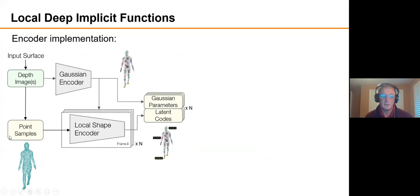The latent codes are actually encoded after the Gaussian parameters are computed. So in our encoder, we take the depth images, the Gaussians are produced, and then they're used along with point samples to actually encode those local areas. So in the end, you end up with Gaussian parameters and latent codes.